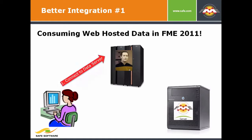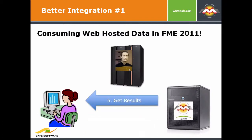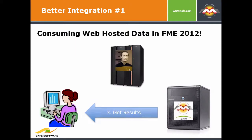Previously, users would find data on the web, have to download it, push it up to the server themselves, trigger the job on the server, and then get the results. That's very time-consuming, very manual, very labor-intensive, and you're not going to automate that. If you're looking for many different files on the web, you'd have to do this over and over again. So we looked at this and said there's a better way. Now if you find data on the web, you simply give that URL to the FME Server, and the FME Server does all the work.